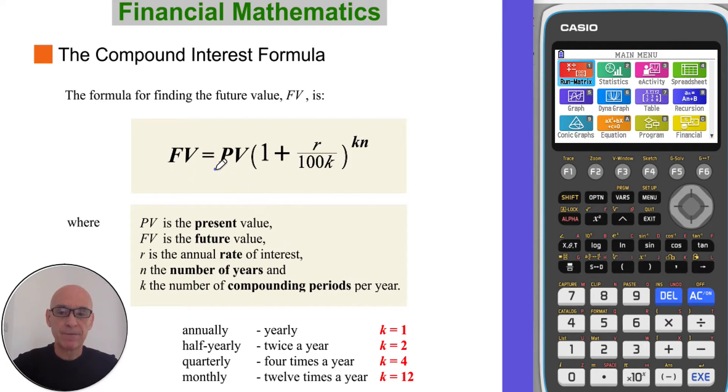where PV is the present value, R is the annual rate of interest, N is the number of years, and K, which appears twice in the formula, is the number of compounded periods per year.